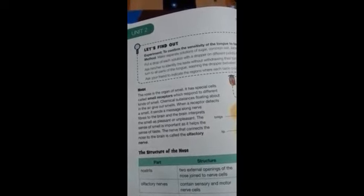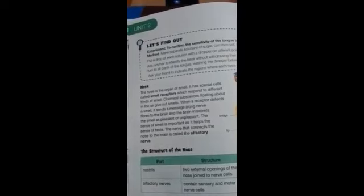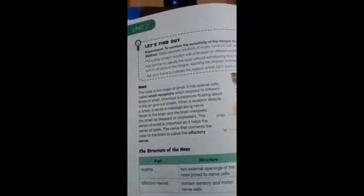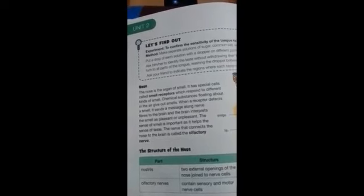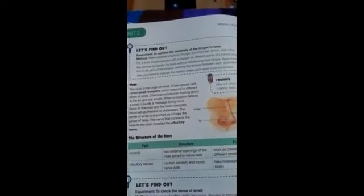Impulses go to the brain, and the brain responds through olfactory nerves so we can smell. Look at the structure of nose. Nostrils are the two openings that act as a passage through which different smells enter the nose. Olfactory nerves connect the sensory and motor nerve cells and take messages to and from the brain.